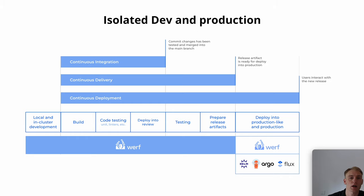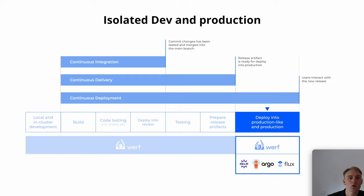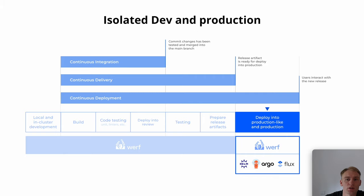If we talk about isolated environments, Werf can be used for the application distribution at the last step of the dev pipeline, and then for the application deployment in an isolated environment. In addition to Werf, there are other solutions at the last step — Helm, Argo, and Flux. This highlights the possibility of implementing hybrid approaches where the user can benefit from both solutions.